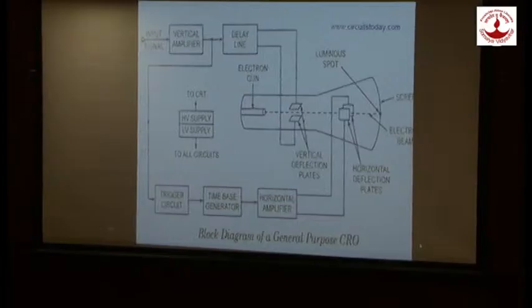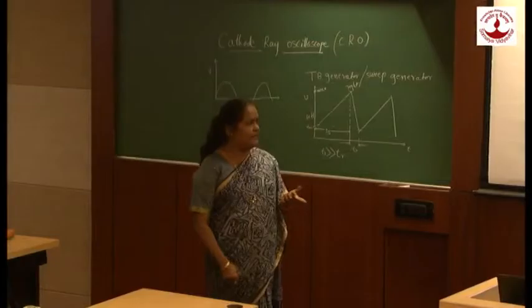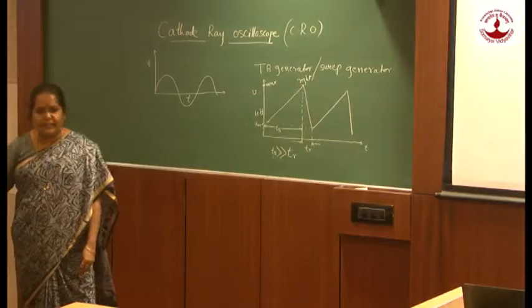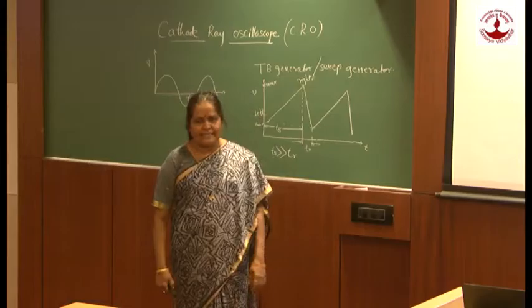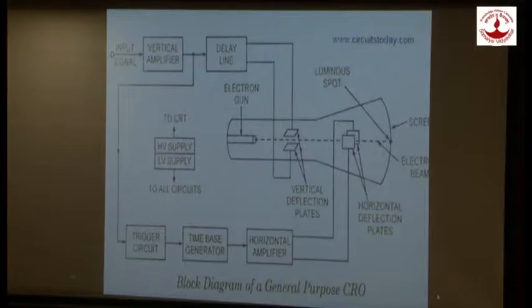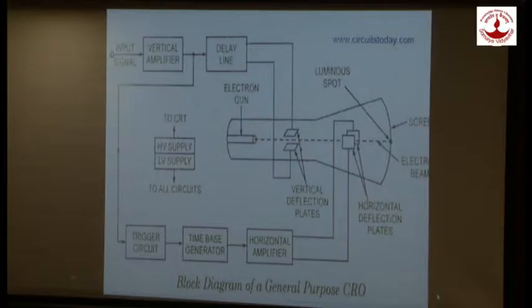The next circuit is the horizontal amplifier. Similar to the vertical amplifier, the horizontal amplifier acts as an amplifier whose gain can be adjusted by an external control on the CRO front panel — the time per division knob. It also consists of a phase inverter and push-pull amplifier circuits which give two output signals applied to the two horizontal deflecting plates. Both the vertical and horizontal signals are totally independent of each other, so the CRO spot can be traced anywhere on the screen.